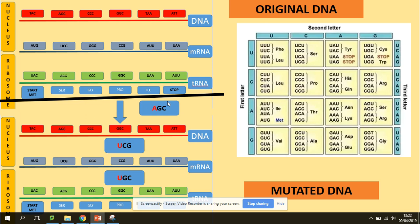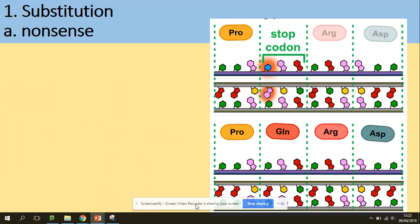AGC codes for the amino acid serine (Ser). As you can see, the sequence of amino acids is now different, so the structure of the protein coded for will be different.